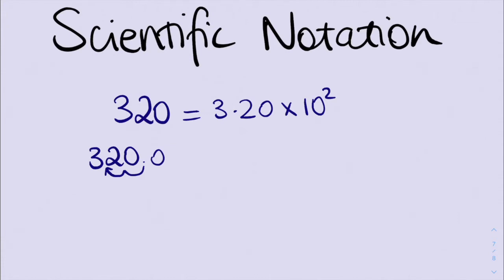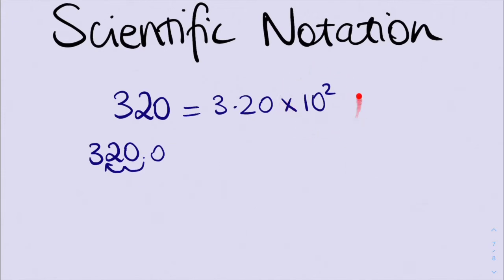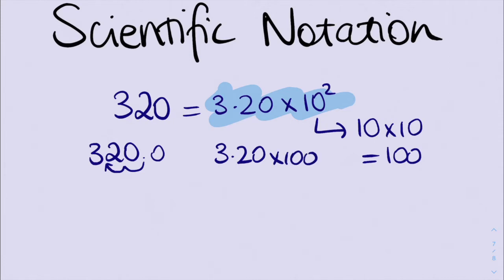So if we move our decimal place back once, we've divided something by 10. And if we move it backwards again, we divide it by 10 again, which means we've divided it by 100 overall. And this here, this 10 to the power of 2, when we multiply that out, that equals 10 times 10. And 10 times 10 equals 100. So what this is telling us is that 3.20 times 100 equals 320, which it does.